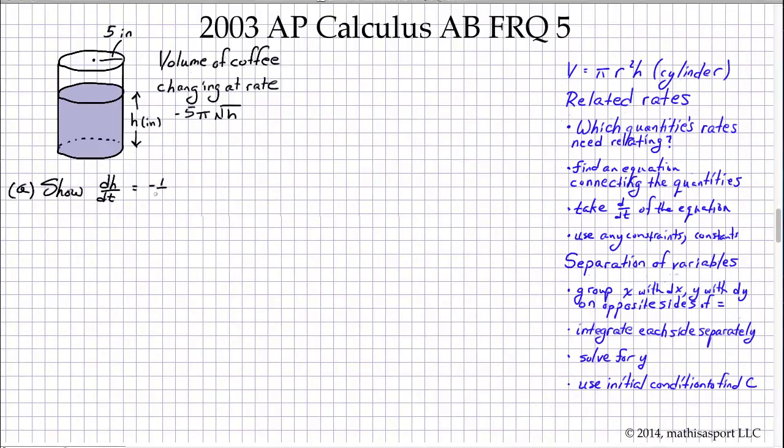Now in a related rates problem, it is typical that we have to first understand which quantities rates need relating. Well, dV/dt is the only information that is given us in terms of rates, and dH/dt is the quantity that we need to show a connection to. So the rates, the quantities rates that need relating are V and H.